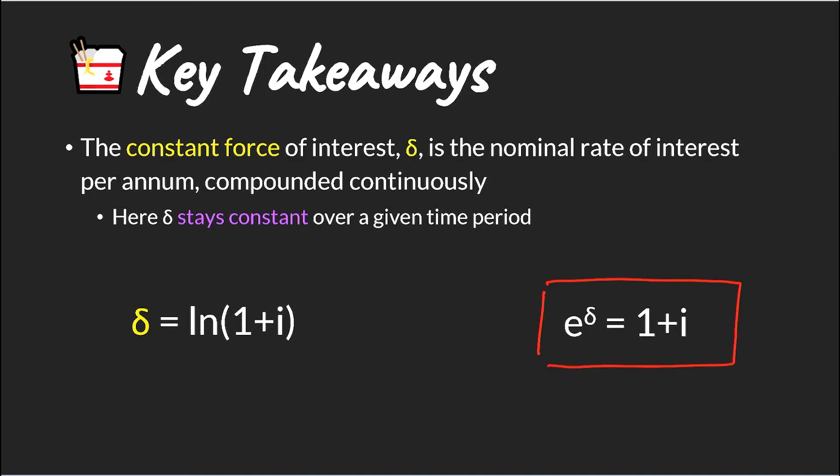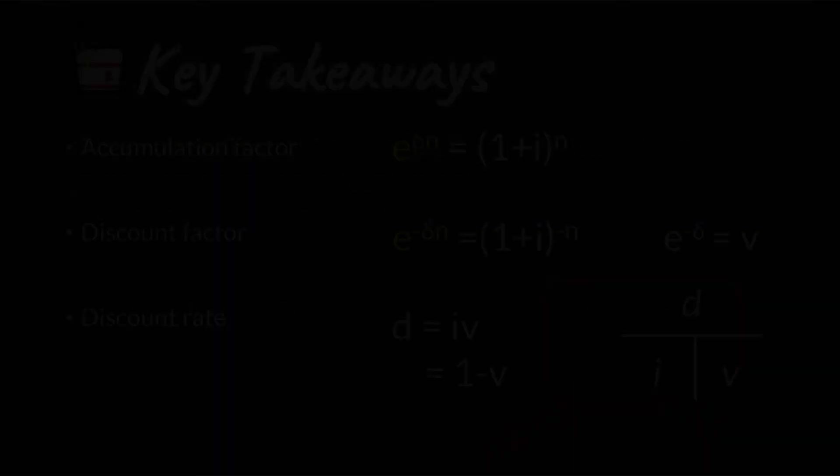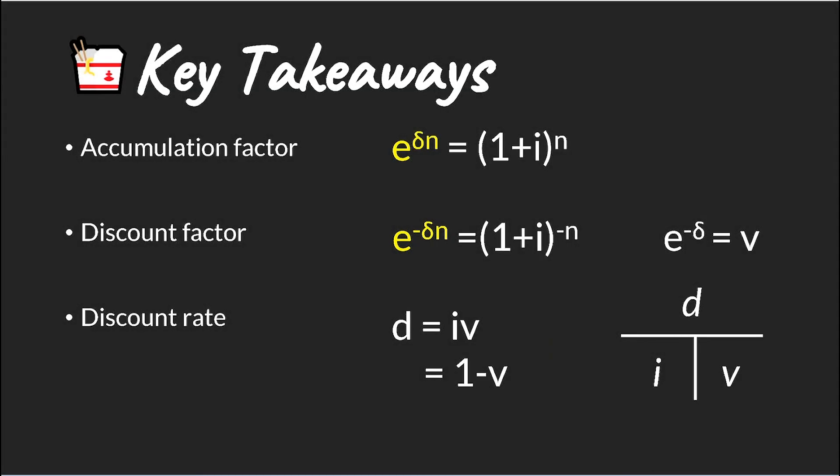e to the delta equals 1 plus i is probably going to be the most useful way to remember this, because it easily translates to an accumulation factor or discount factor. Similarly, we have our new accumulation factors and discount factors, and we will see that these relationships, in terms of interest rates V and D, still hold in the case where we have a constant force of interest.